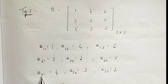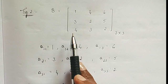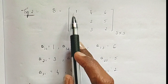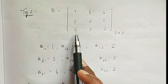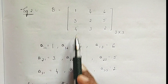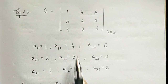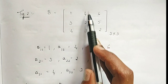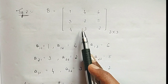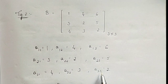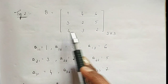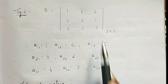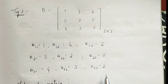a(3,1) — third row, first column. The third row is [4, 3, 2], so the first column element is 4. a(3,2) — third row, second column — element is 3. Next is a(3,3) — third row, third column — so that is 2.